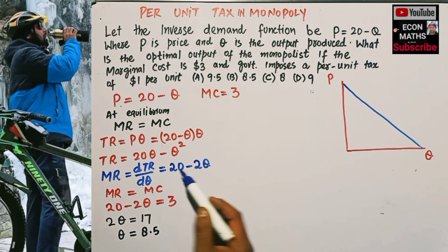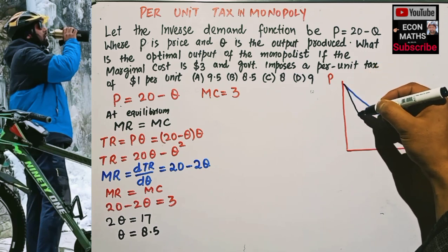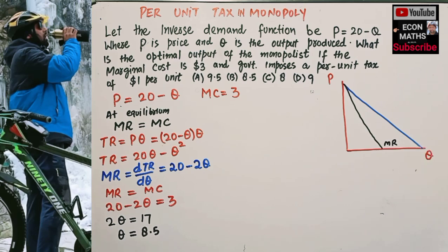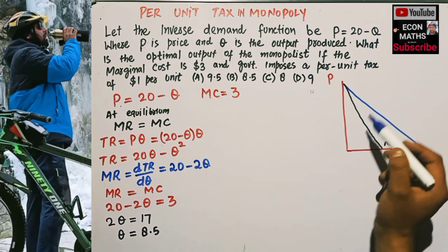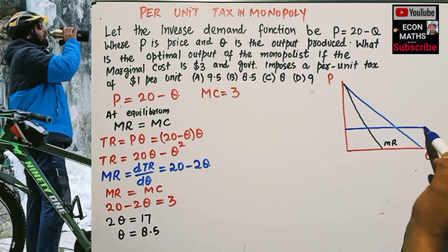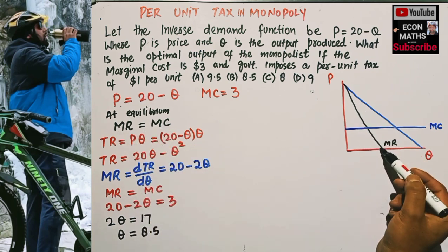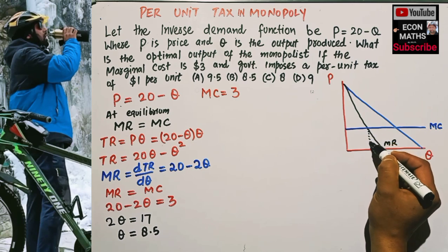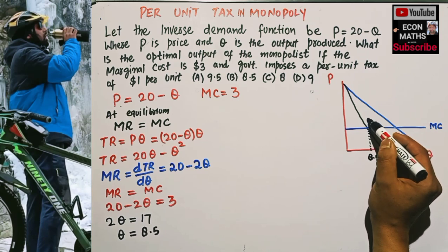So this is our demand function and we got the marginal revenue function: 20 minus 2q. Let's draw the marginal revenue function on the graph. Marginal cost is 3, so let's draw the marginal cost curve here. At equilibrium, marginal revenue equals marginal cost, so the equilibrium output is 8.5.